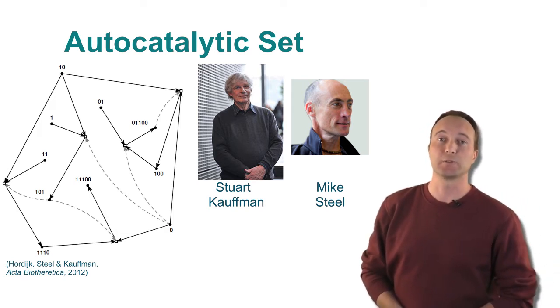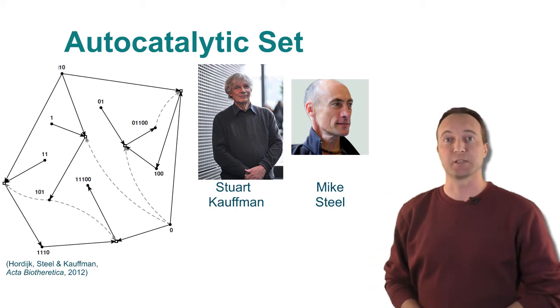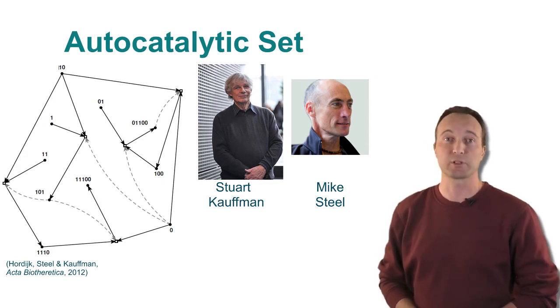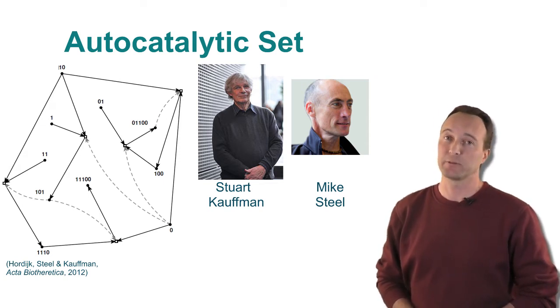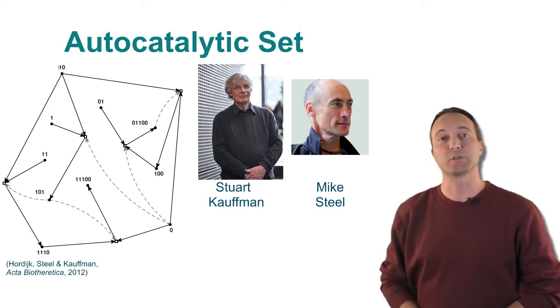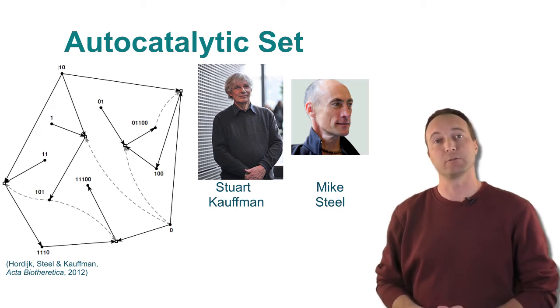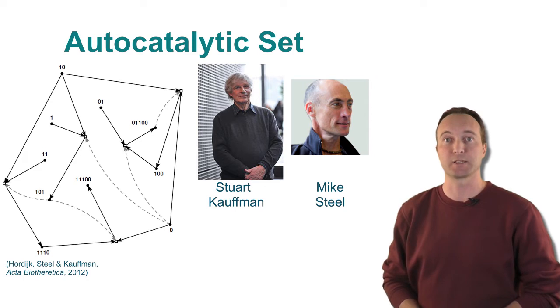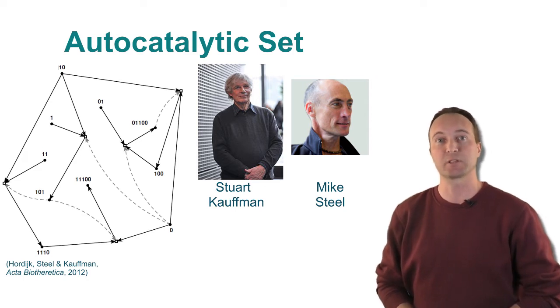What these detailed studies have shown is that autocatalytic sets have a high probability of existing in simple models of chemical reaction networks, also for chemically plausible levels of catalysis. For example, in this simple bitstring model where catalysis is assigned randomly, each molecule only needs to catalyze between one and two ligation reactions on average, to already have a high probability of autocatalytic sets to exist in random instances of the model.